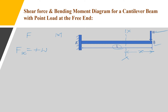Now for the bending moment, it is calculated as force times perpendicular distance. The bending moment at the XX section, MX, equals the force W times distance X. Due to the point load at the free end, the deflection curve is such that the bending moment sign is negative. The distance from W to the XX section is X.